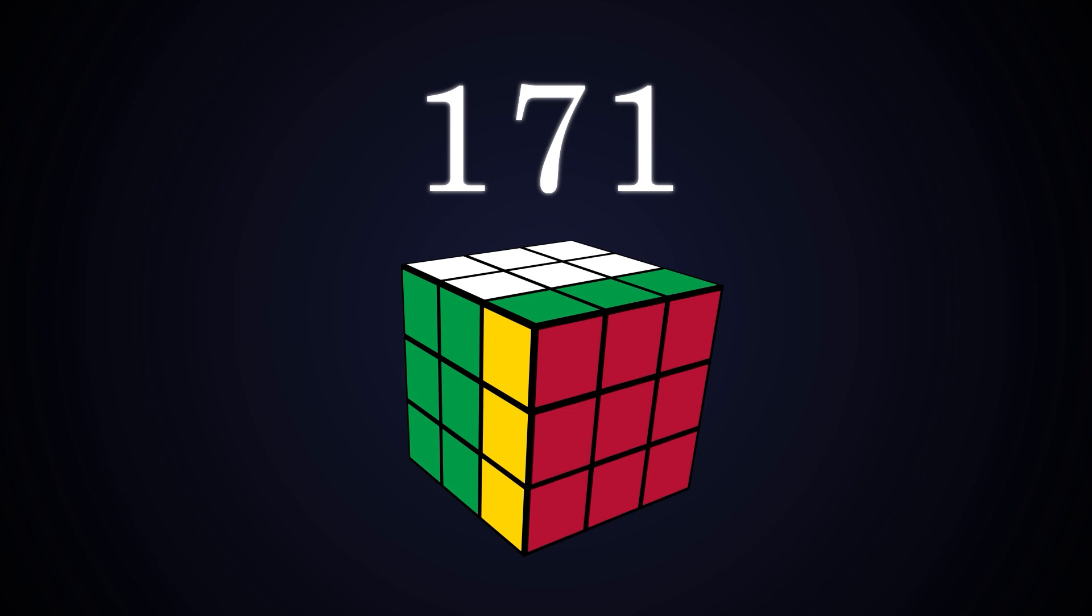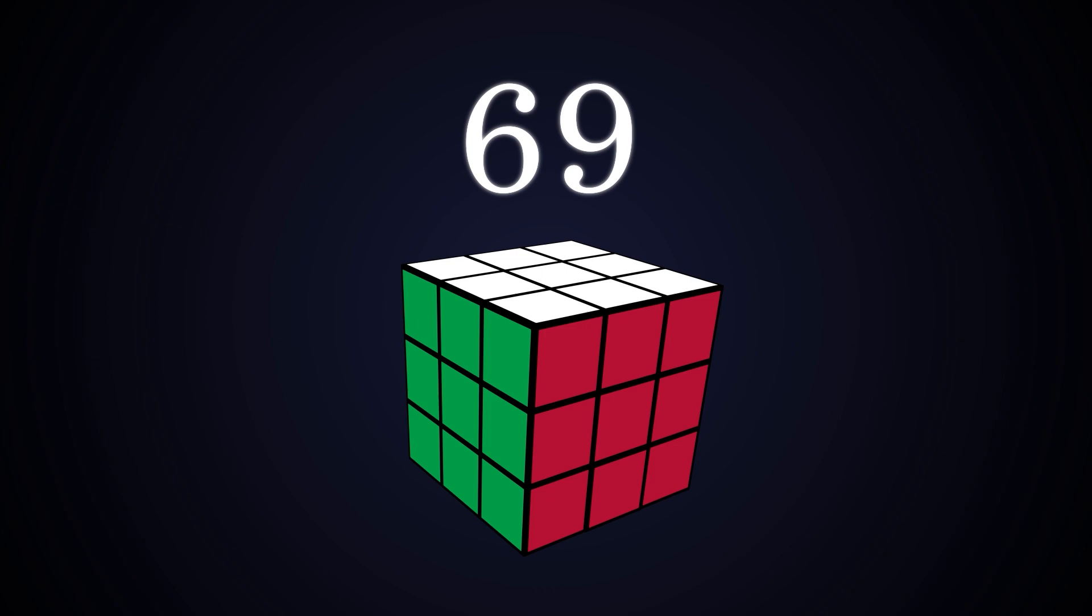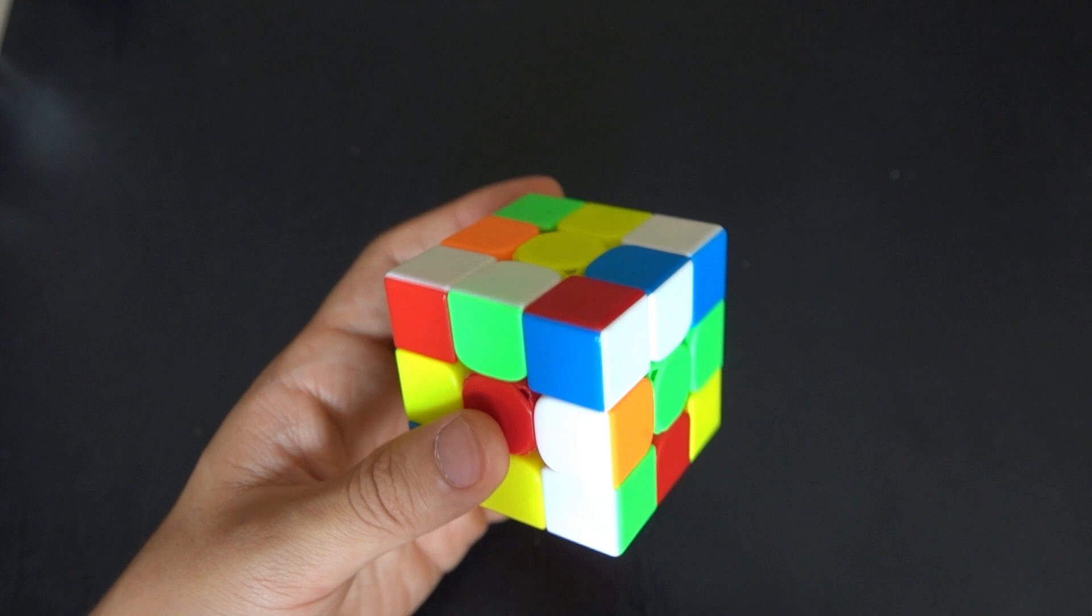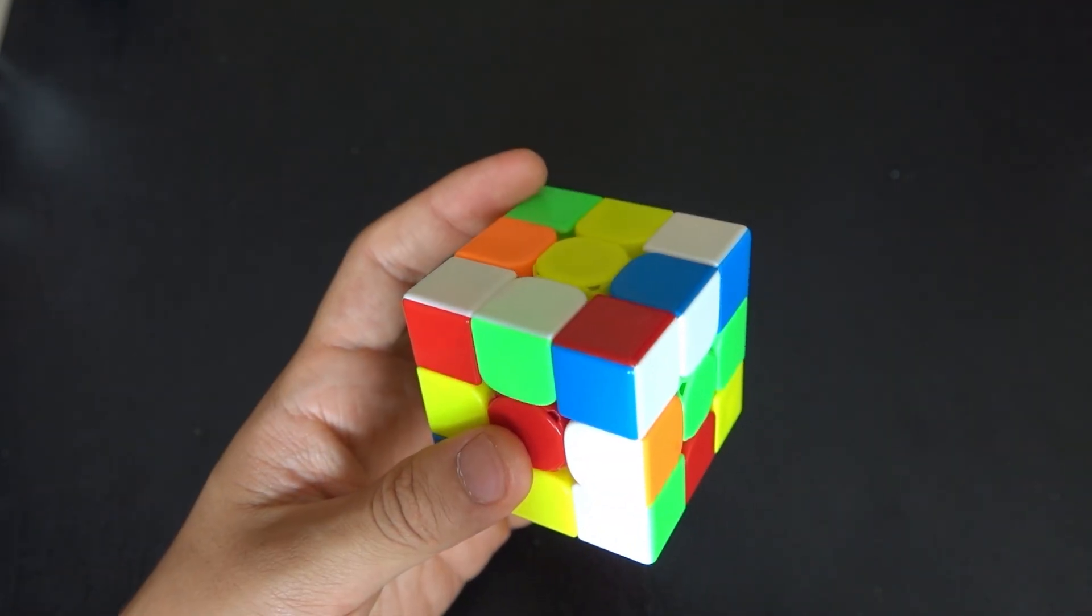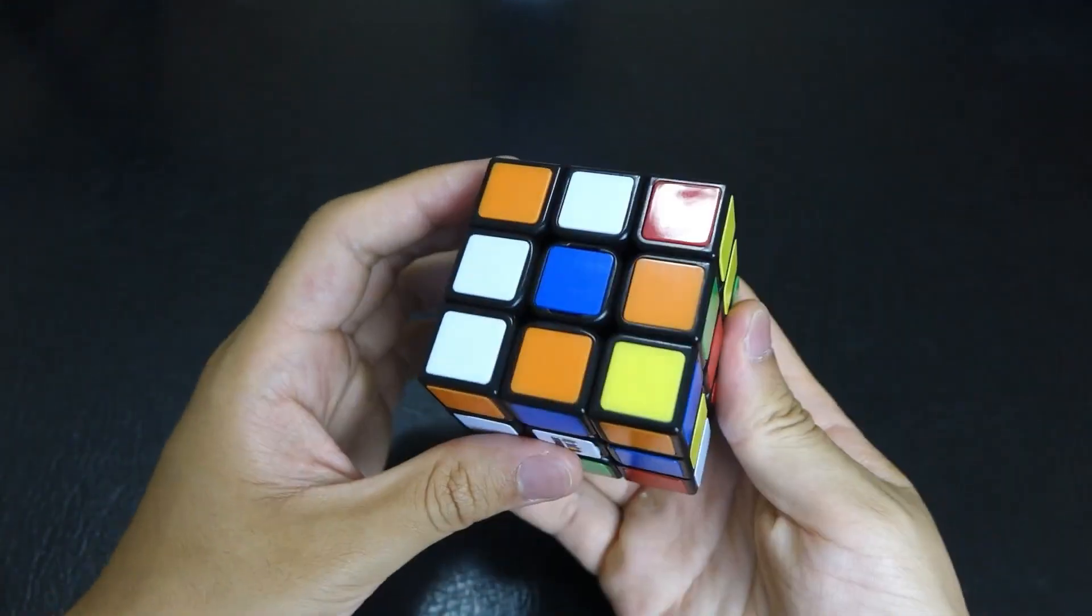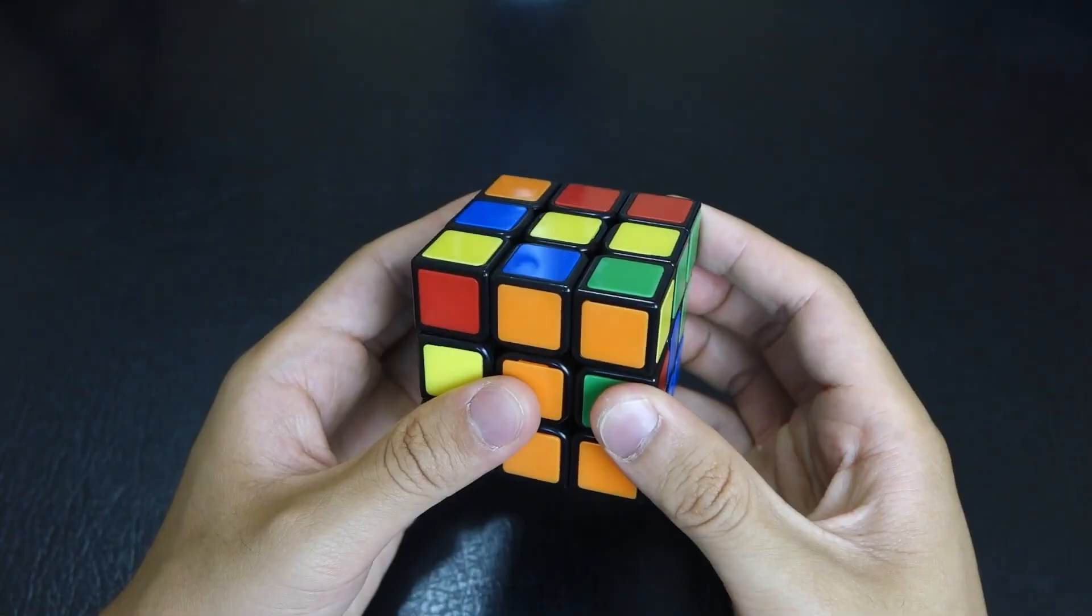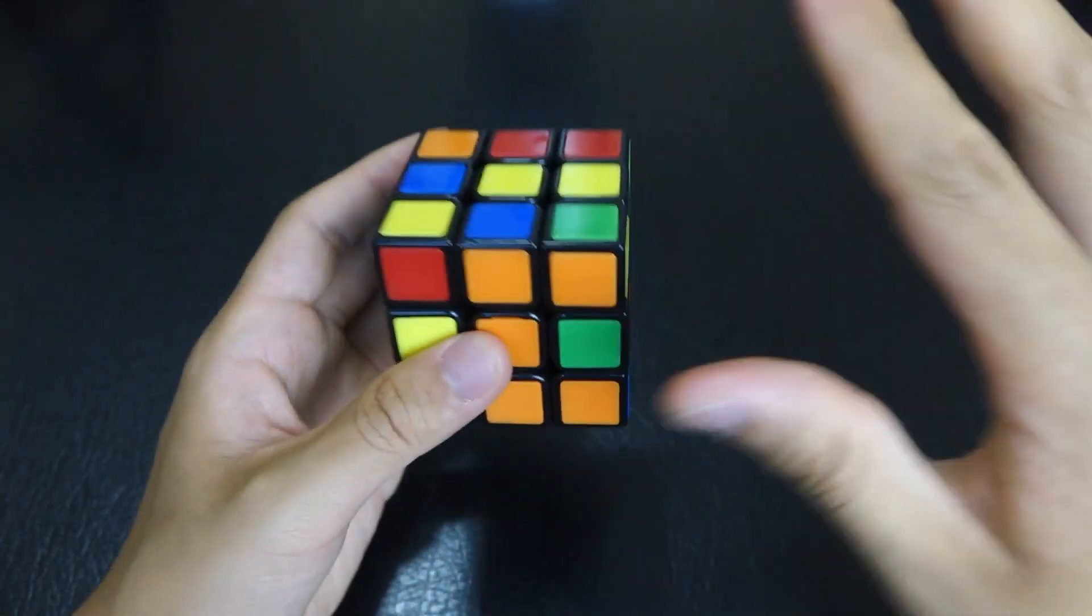And even if everyone just solved the cube when it's one move away, that number drops down to 9 years, but still with the help of everyone on earth. But of course that's only if you rely on pure luck. If you just learn a proper method that solves everything piece by piece, that time goes all the way down to minutes or even seconds by just one person or robot.